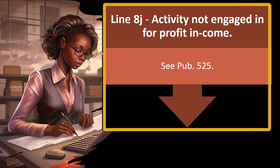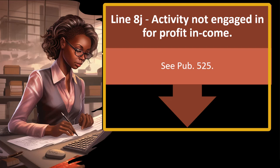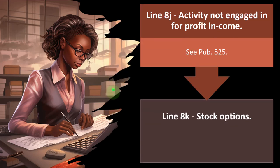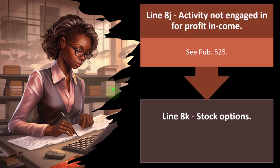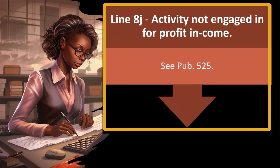Line 8J — activity not engaged in for profit, such as hobbies. See Publication 525 for more detail. There's obviously going to be a question as to whether something is a hobby or not — the IRS is skeptical of losses.